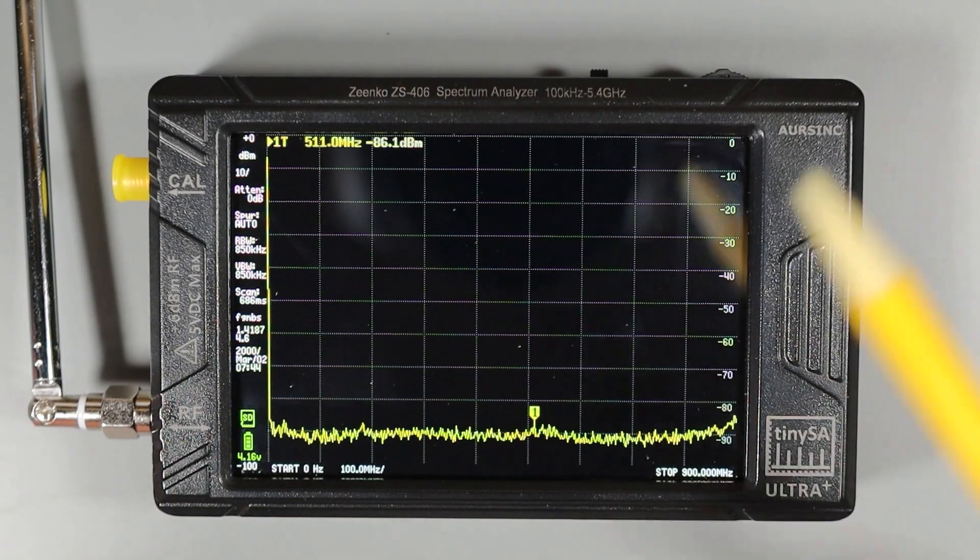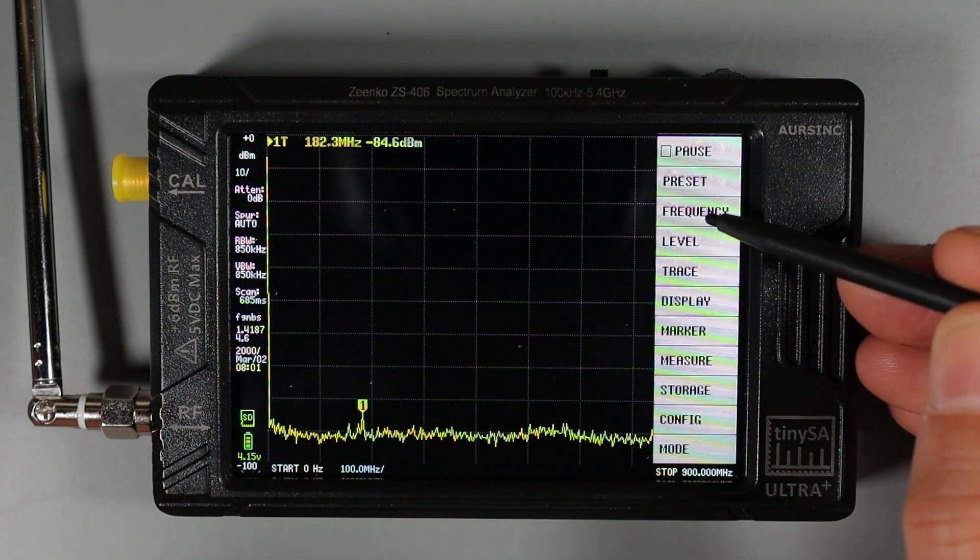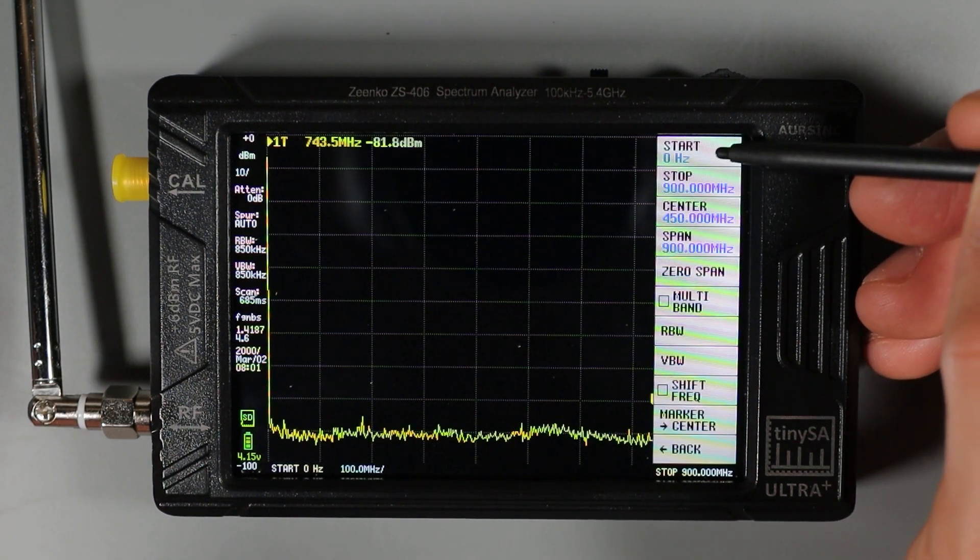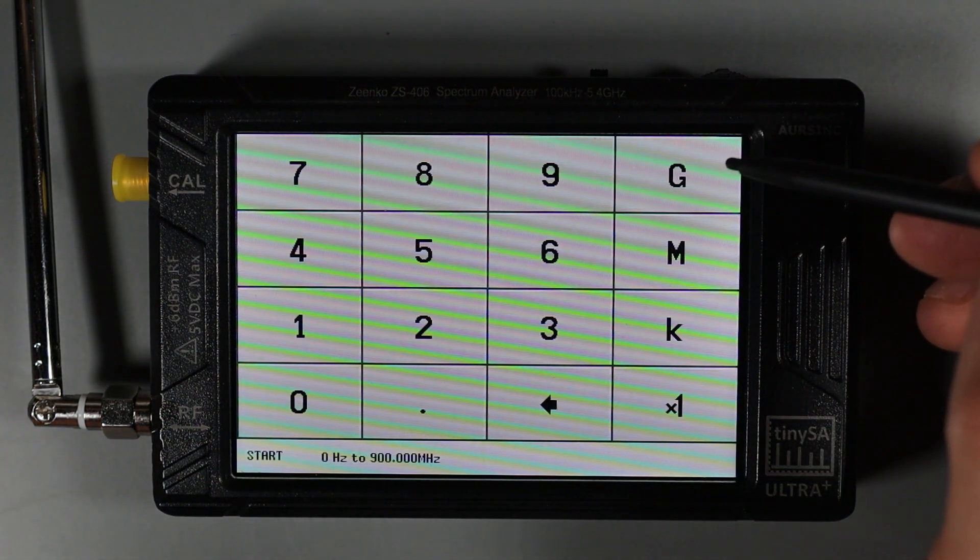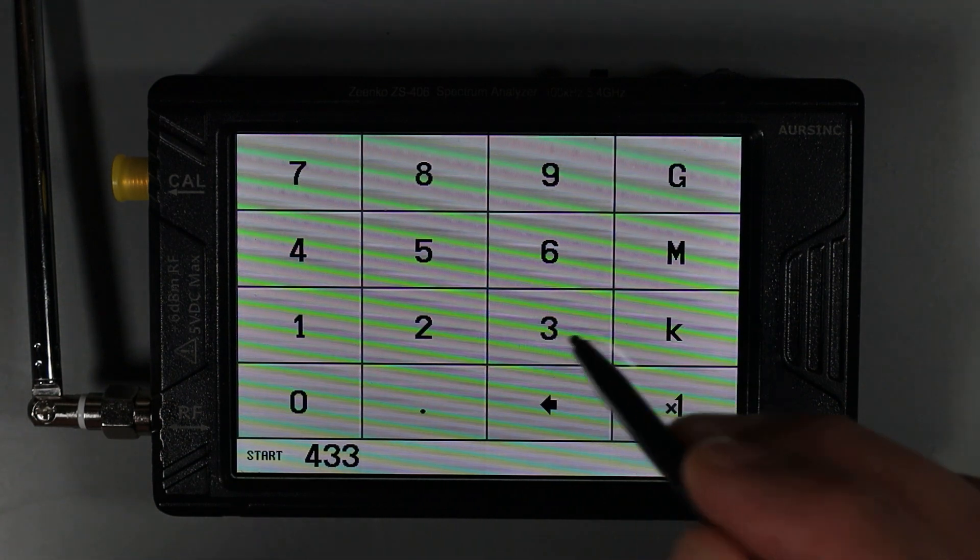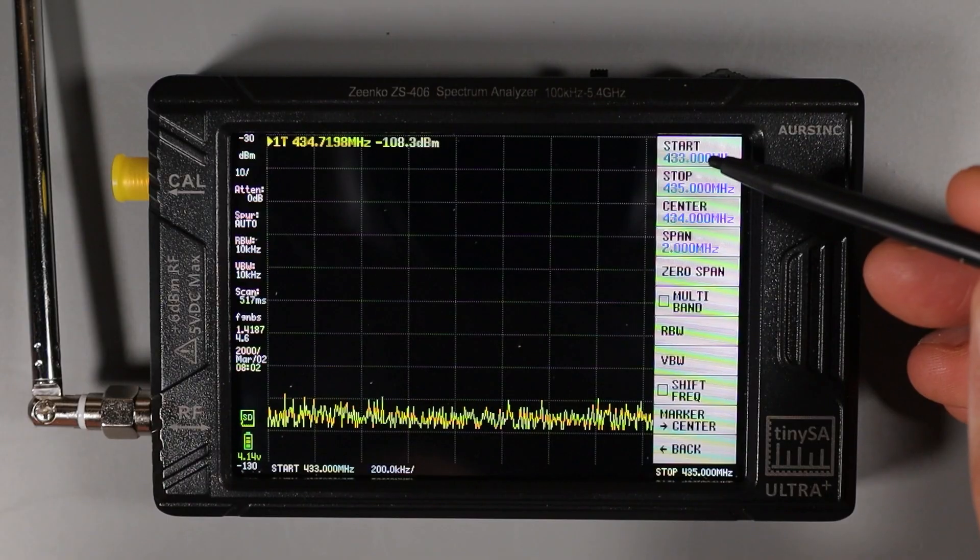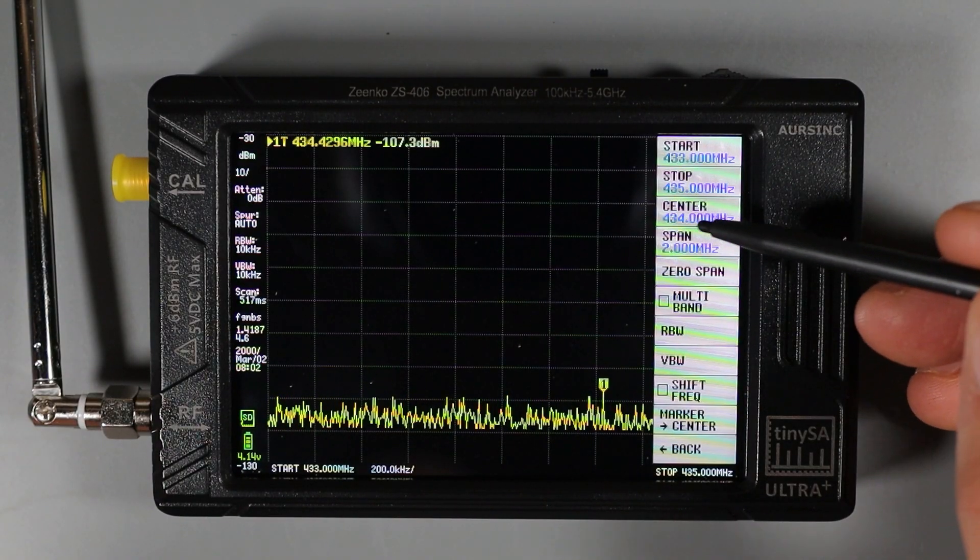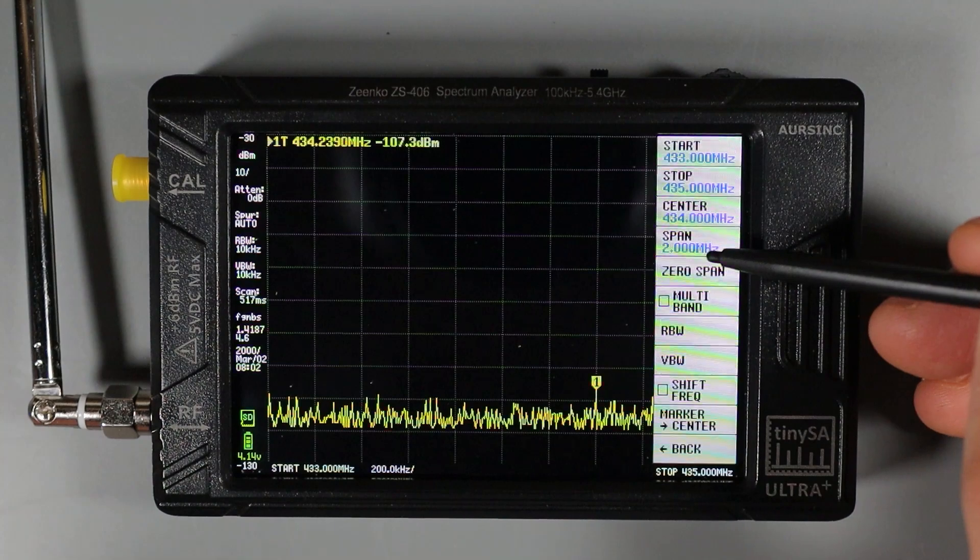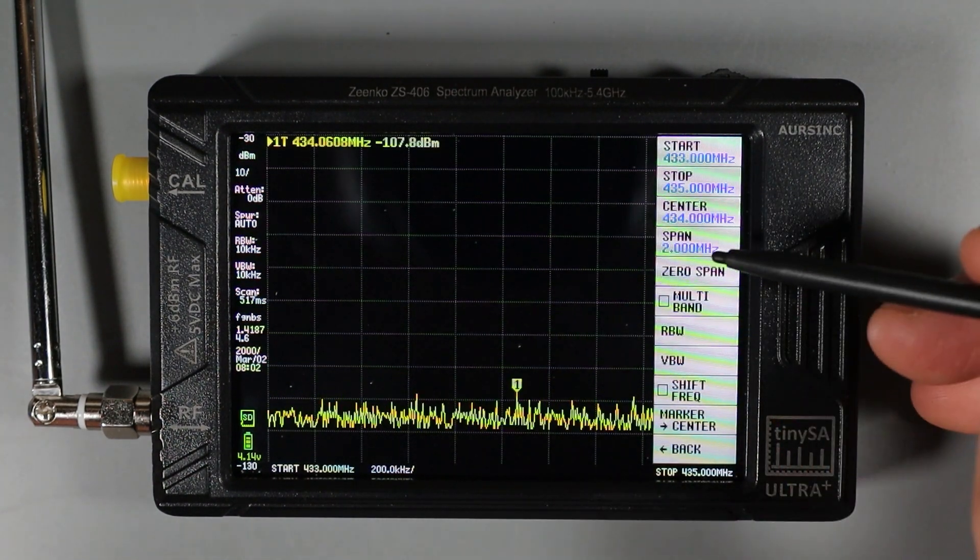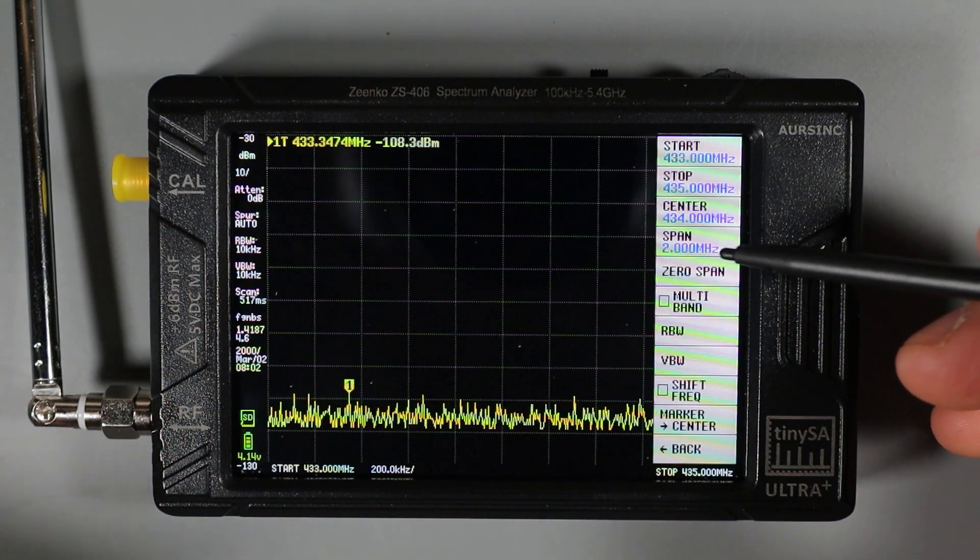To get a better look at a signal of interest, we can narrow up the spectrum. I'm going to go into the main level of the menu and then choose frequency. You can see here, I can choose a start frequency, a stop frequency, a center frequency, and a span frequency. So for the purposes of this demo, I'm going to set my start frequency to 433 megahertz and I'm going to change my stop frequency to 435 megahertz. Now you can see the new start and stop frequencies are here. And the TinySA automatically calculates the center frequency at 434 megahertz and the span at two megahertz.